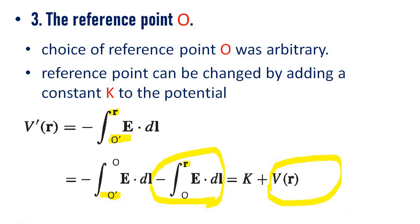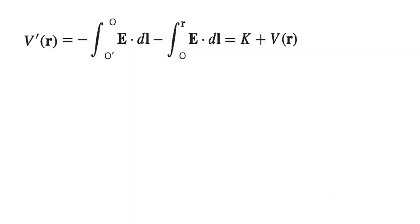V prime of r equal to some constant k plus V of r. That is, the reference point can be changed from O to O prime by just adding a constant k. This is the equation: V prime of r equal to k plus V of r.